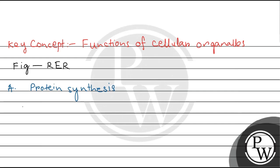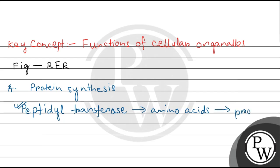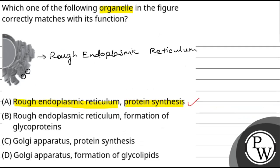The process involves ribosomes, peptidyl transferase enzymes, and amino acids. The products made in RER are either integrated into the cell membrane or secreted out of the cell. So this option is correct.